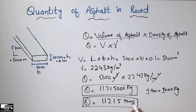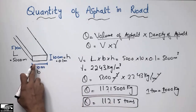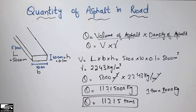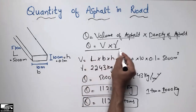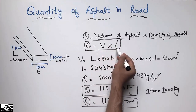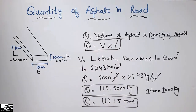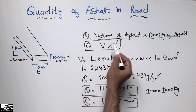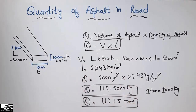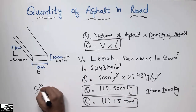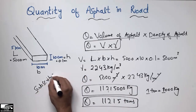Since one ton equals 1000 kilograms, dividing by 1000 gives us 11,215 tons of asphalt used in this road. You just need this formula: volume × density. Similarly, you can find the quantity of concrete in a road by using its density and volume. Don't forget to subscribe to our channel for new videos — thank you for watching.